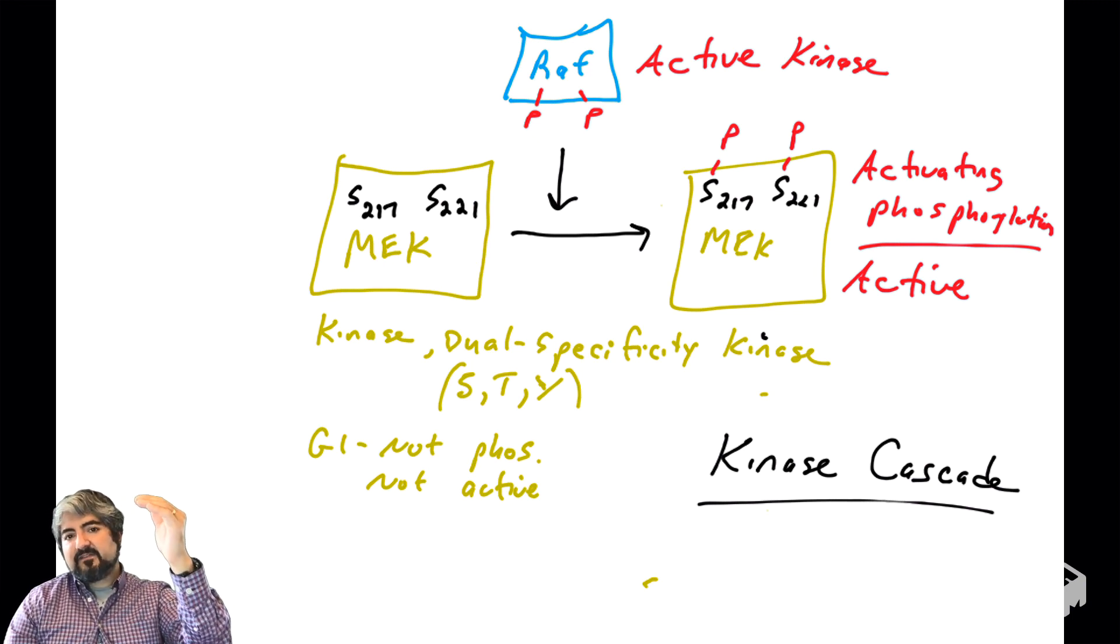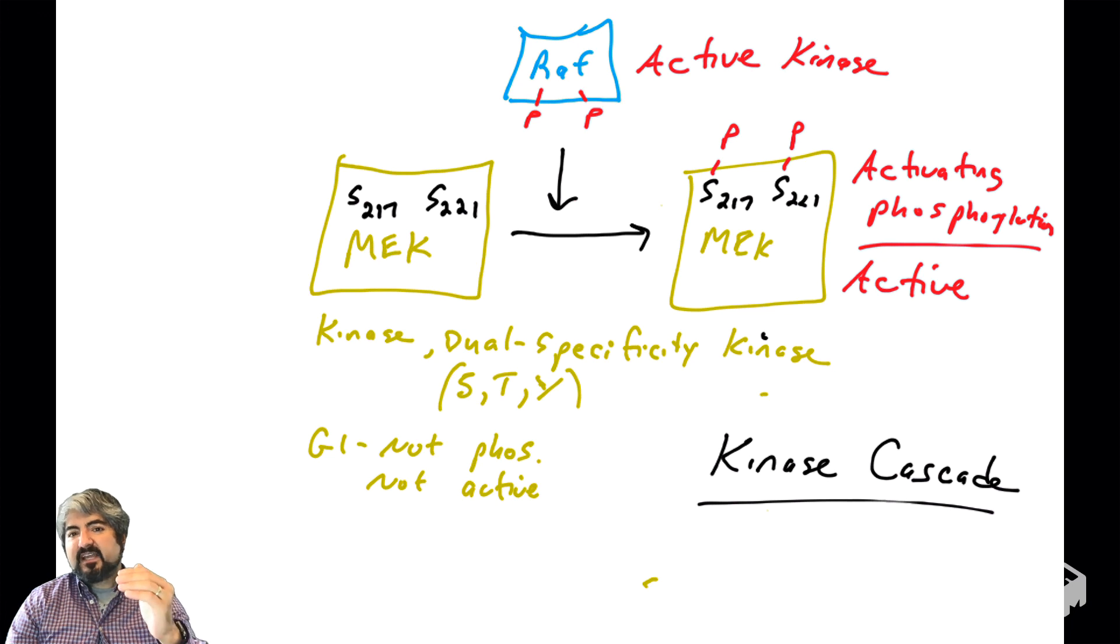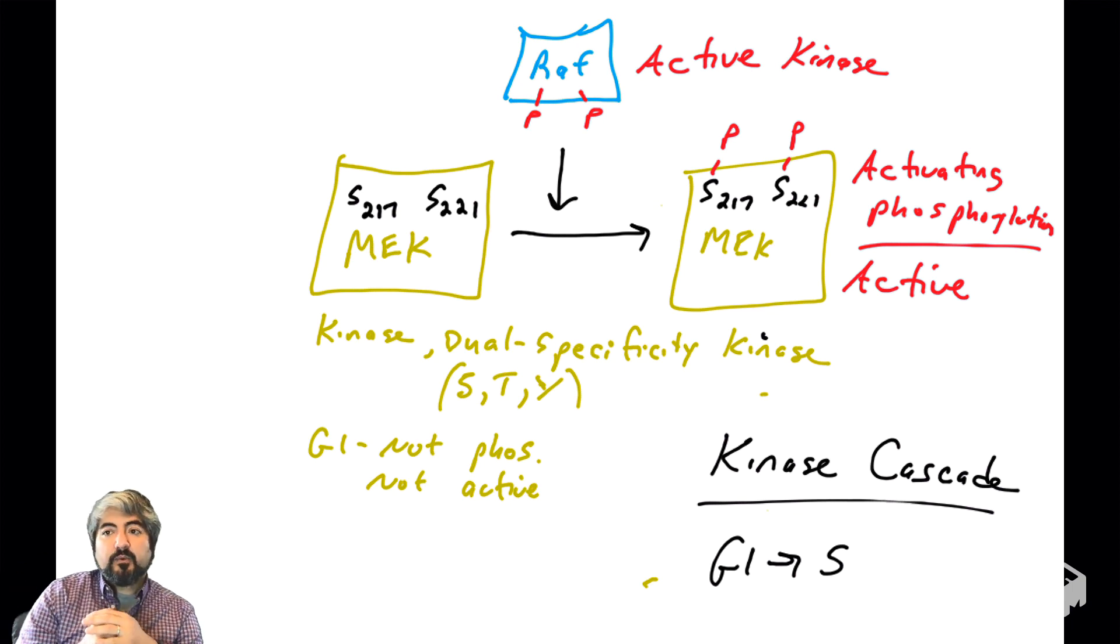What you have here is the beginnings of a kinase cascade. RAF is a kinase, it'll activate and phosphorylate MEK, which is a kinase, which phosphorylates another kinase. The point of this is to get the cell to go from G1 into S phase. RAF is commonly phosphorylated and activated, pushing the cell to phosphorylate and activate MEK. These signals tell the cell it's time to go into S phase. That is how RAF is regulated by RAS and how RAF regulates MEK.